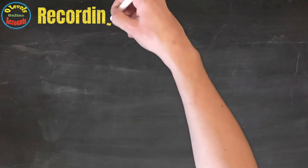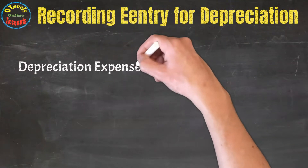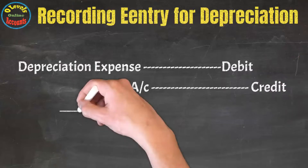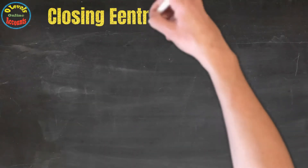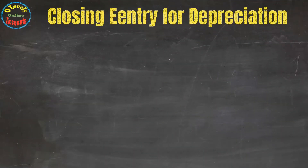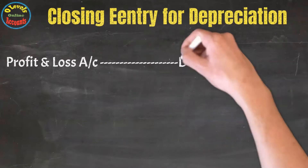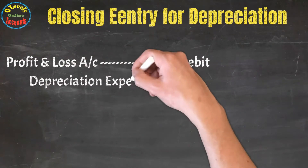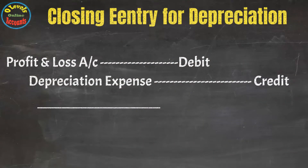The recording entry of depreciation is: depreciation debit and asset account credit. It is an expense and it has to close in the profit and loss account. The closing entry is: profit and loss account debit and depreciation credit.